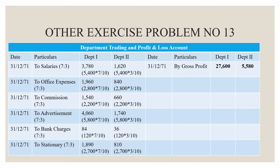Now we calculate the ratio of each expense value. On the credit side of the Profit and Loss Account, we transfer gross profit from the trading account: $27,600 for Department 1 and $5,580 for Department 2. On the debit side, we will split all expenses using the appropriate ratio based on sales.